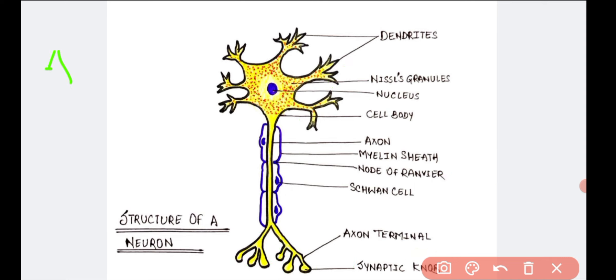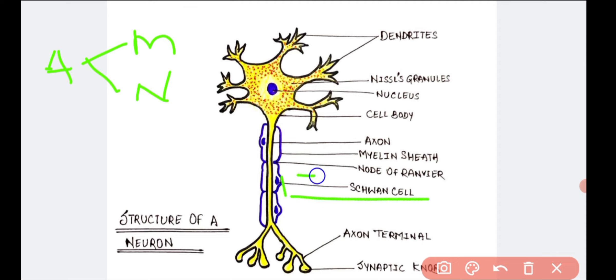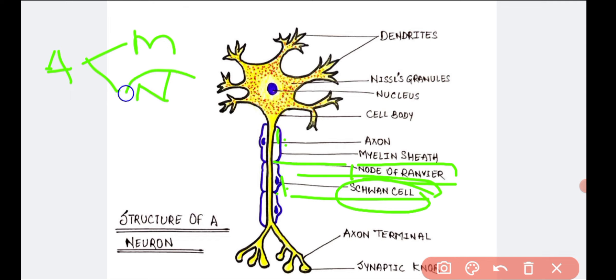Axons are of two types: myelinated axons and non-myelinated axons. Myelinated axons are those nerve fibers which are enveloped by the Schwann cell. The gaps between two Schwann cells are known as the node of Ranvier, and this helps in the transmission of the nerve impulse.